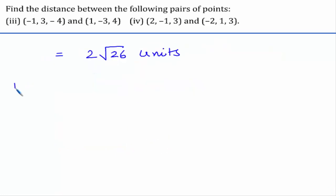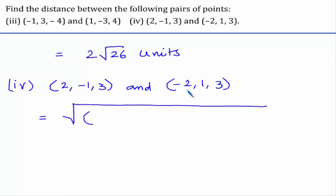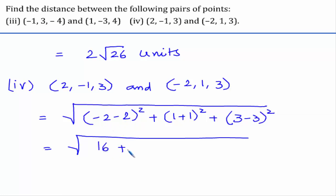Now let us see the next part, which has the points (2, -1, 3) and (-2, 1, 3). Substituting into the formula: (minus 2 minus 2) whole square plus (1 minus of minus 1, that is 1 plus 1) whole square plus (3 minus 3) whole square. On simplification, minus 4 whole square is 16; 2 squared is 4; and this gives 0. So the result is root 20, that is 2 root 5 units.